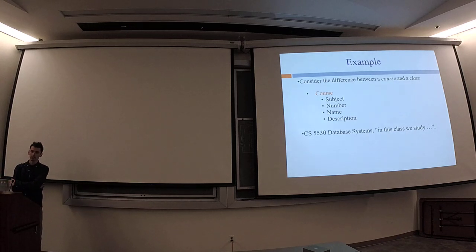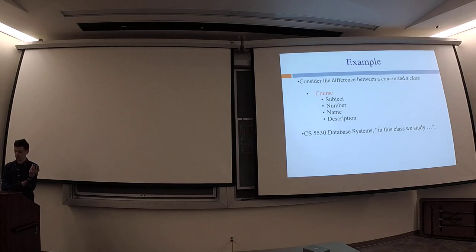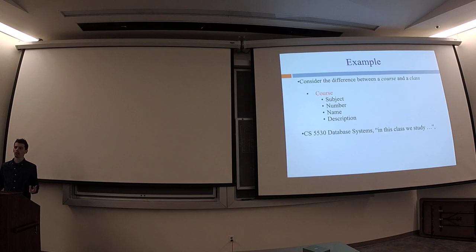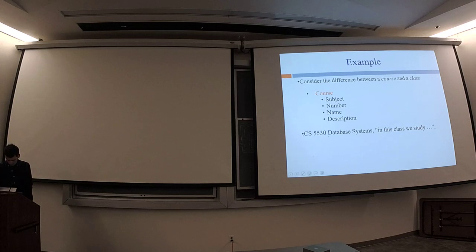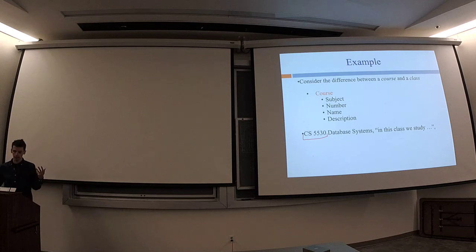Consider the difference between a course and a class in a university setting. A course has a subject, a number, a name, and a description — something like CS5530, where that's the subject and number, the name is 'Database Systems,' and the description says what the course covers. A course can be identified by the combination of subject and number — there's only one department called CS, and within that department only one course numbered 5530. So a course is a strong entity.